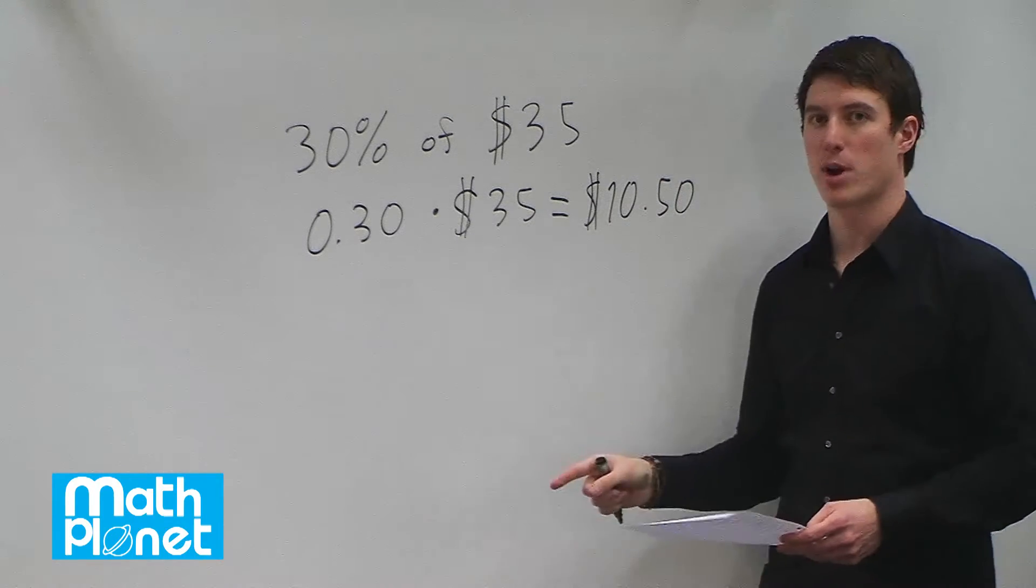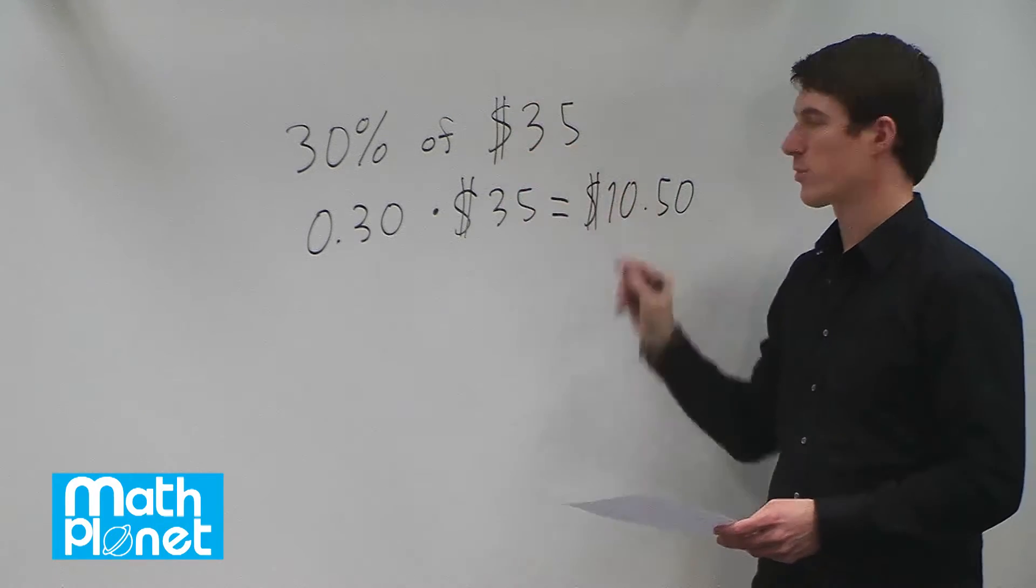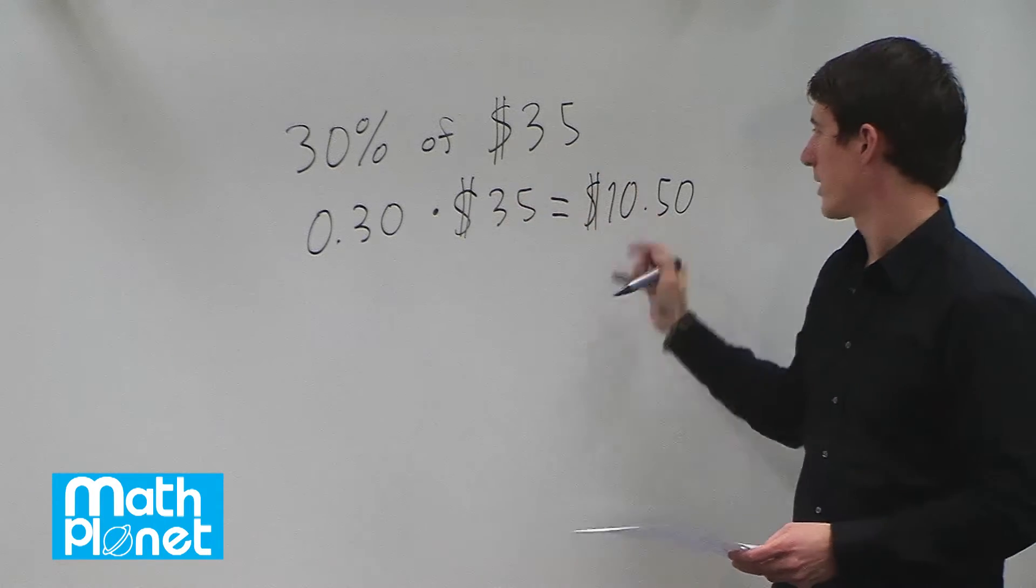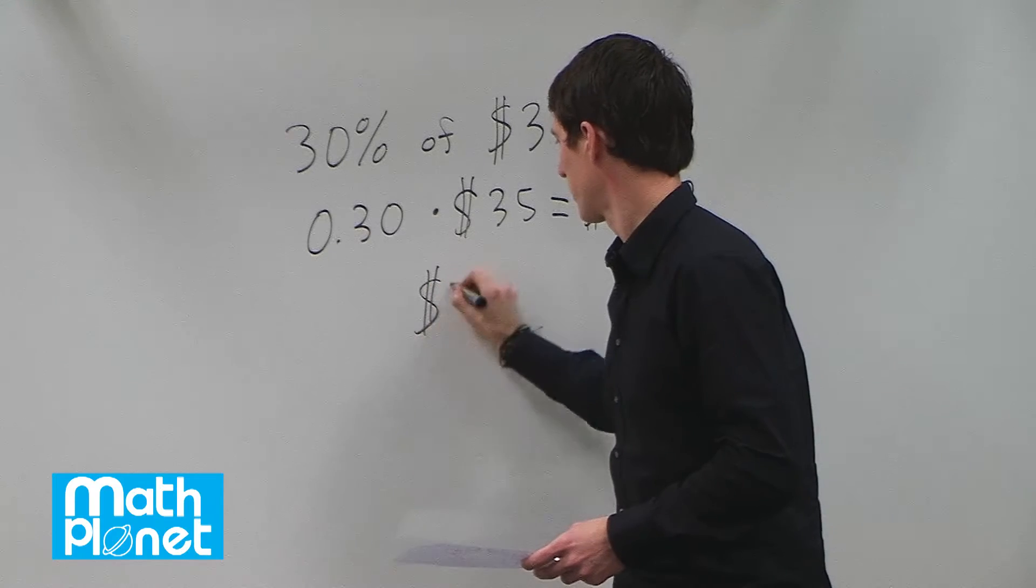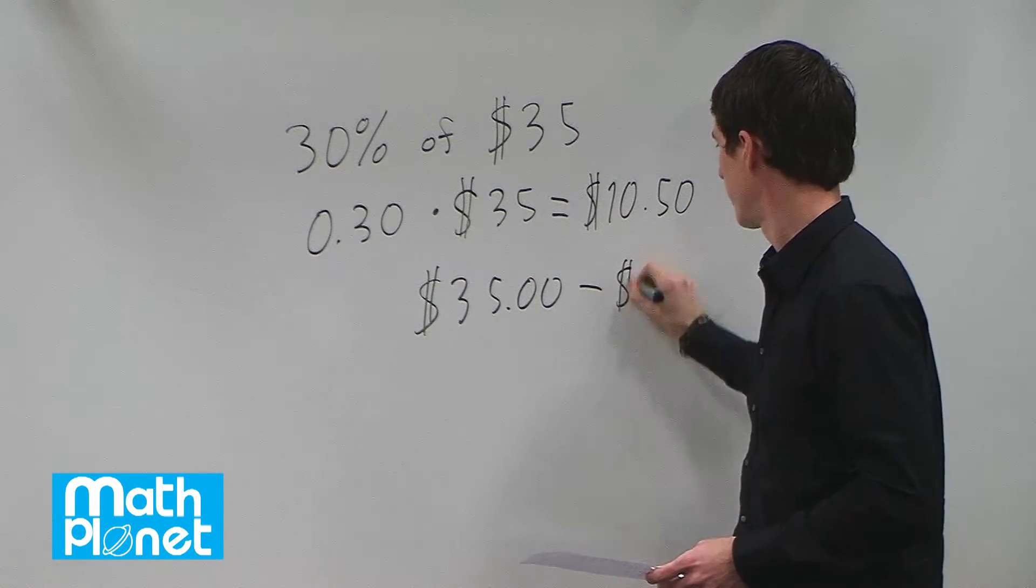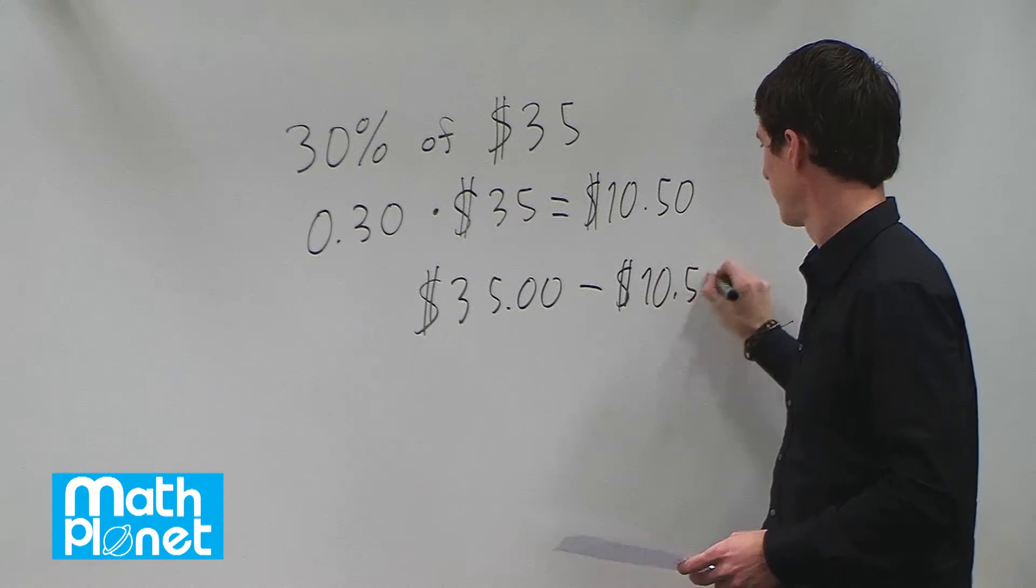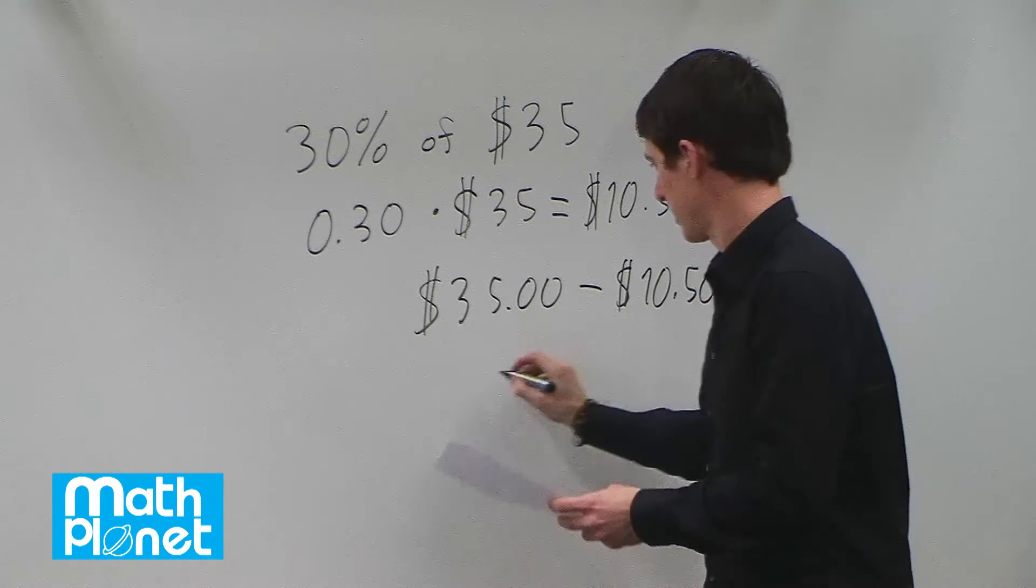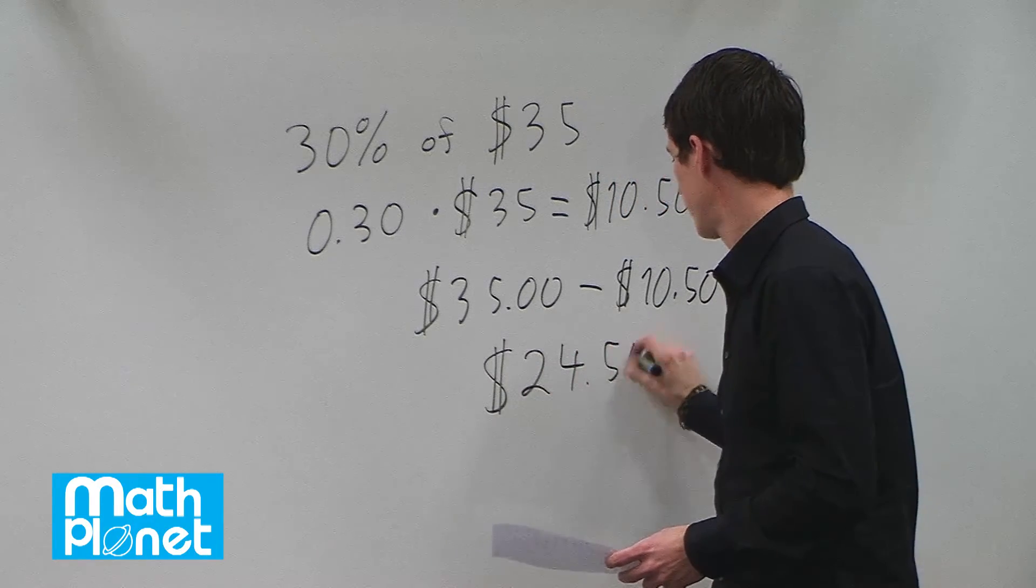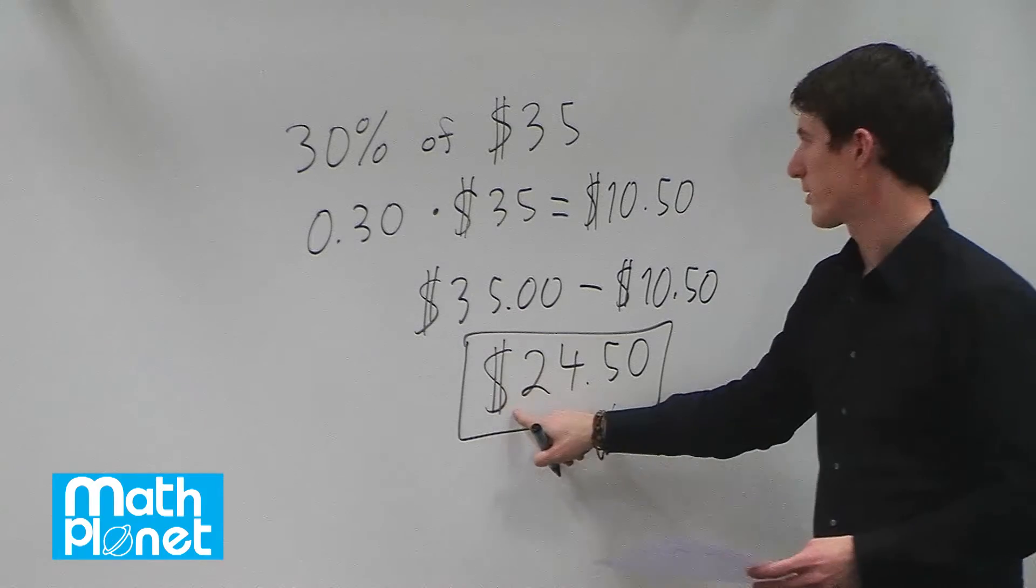Then we can say that the final price is the original minus what we've reduced it by. So this is one way to solve this problem: $35 minus $10.50. That gives us $24.50. So that's the final price.